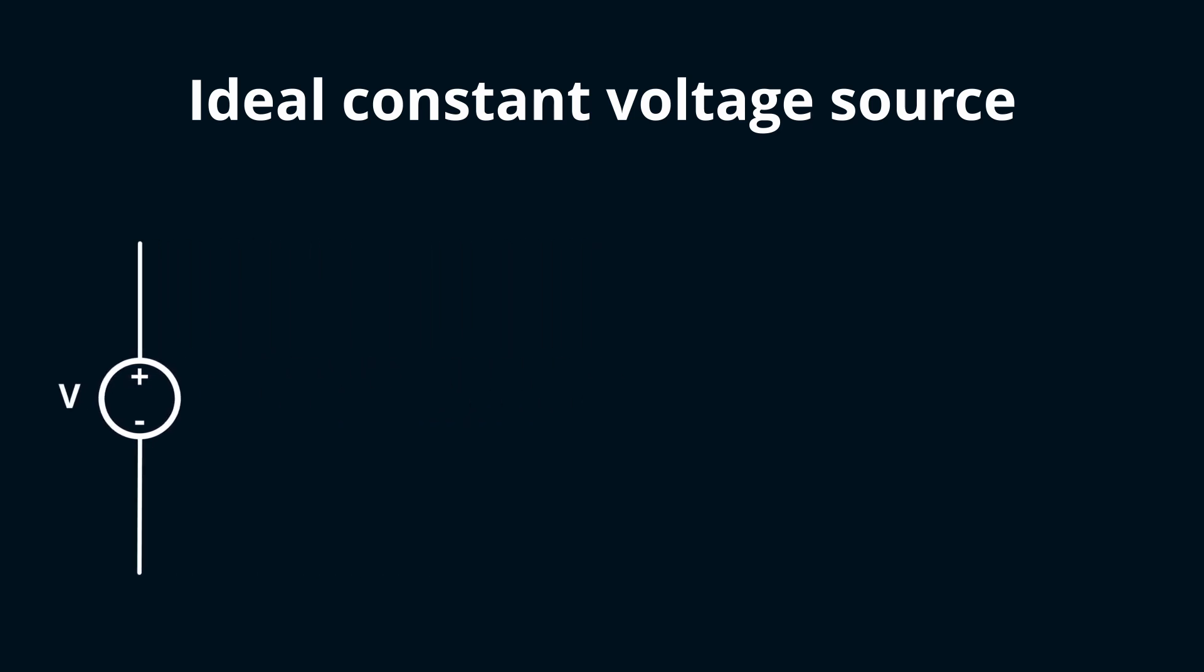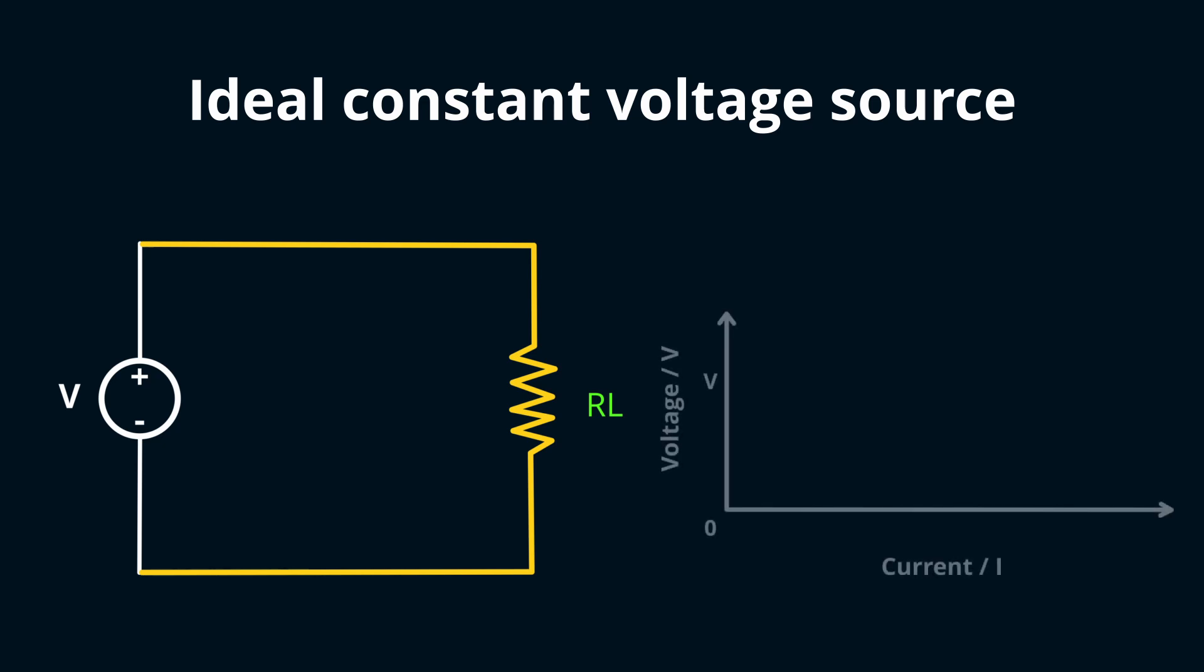The beauty of this source is its constant voltage across the terminals, unaffected by the current drawn by any load. The current it supplies entirely depends on the load's resistance, denoted as RL. Were we to plot this behavior on an IV curve, it'd look something like this.